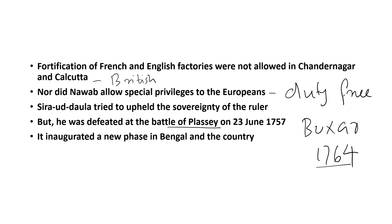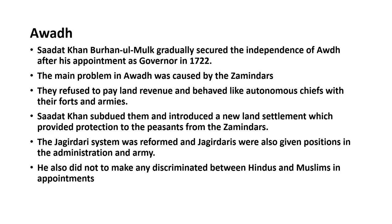These two battles inaugurated a new phase not only in Bengal but also in other parts of India. After establishing control in Bengal, the British spread to other parts of the country. Awadh was the next state carved out from the Mughal imperial authority. It was Sadat Khan, appointed governor by the Mughals in 1722. The main problem in Awadh was created by the zamindars, who were owners of large estates of land.